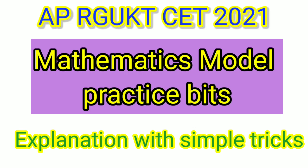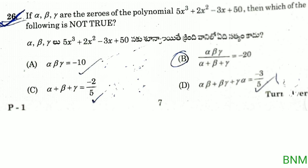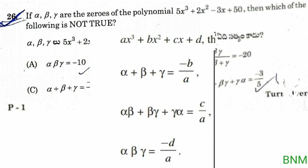Hi students, let us look at the APRJC UKTZ 2021 Mathematics Model Practice bits with explanation. First bit: if alpha, beta, gamma are the zeros of the polynomial 5x cubed plus 2x squared minus 3x plus 50, then which of the following is not true? This is the polynomial.